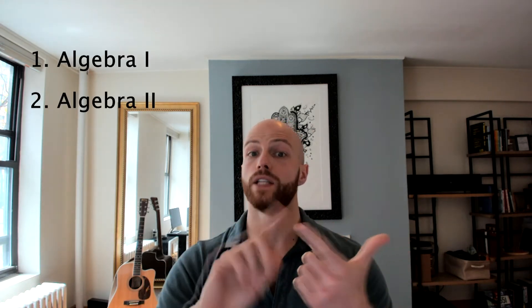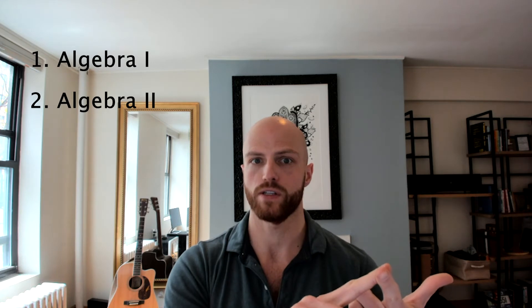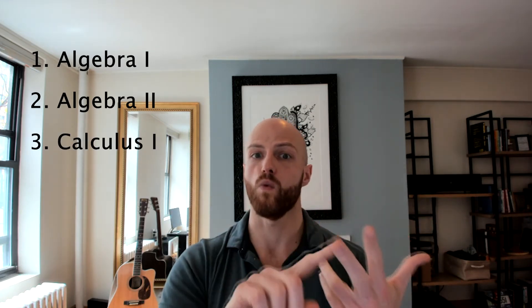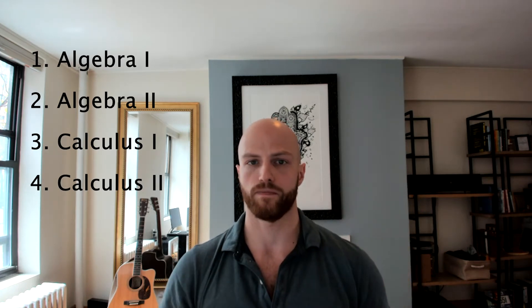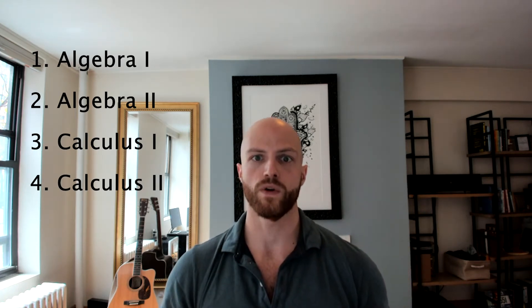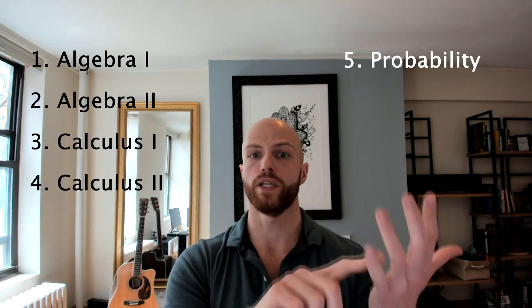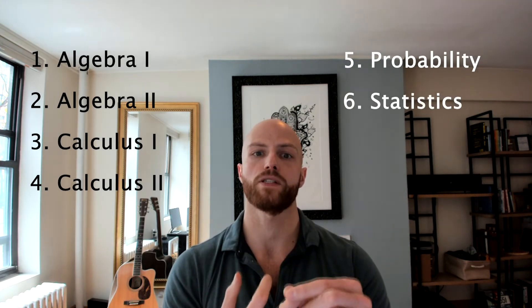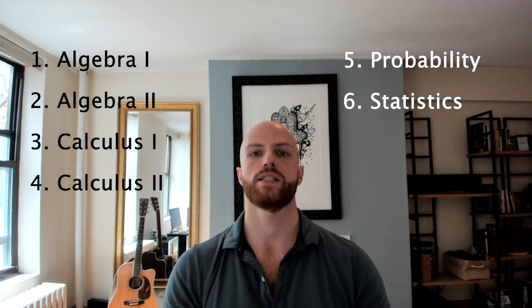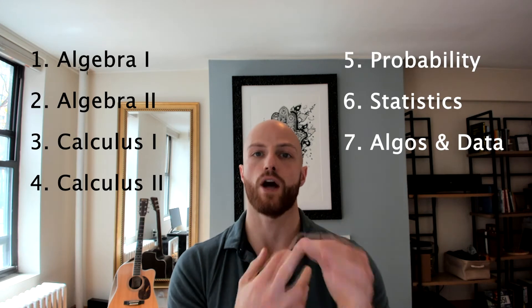The eight topics in this series are organized into four couplets. We've got Intro to Linear Algebra and Linear Algebra 2: Matrix Operations. Then we've got Calculus 1: Limits and Derivatives, and Calculus 2: Partial Derivatives and Integrals. We cover Statistics: Probability and Information Theory, and Intro to Statistics. And then the seventh and eighth topics are in Computer Science: Algorithms and Data Structures, and Optimization.